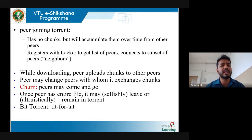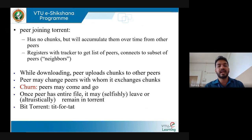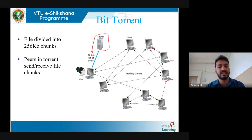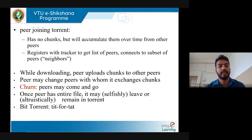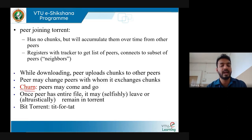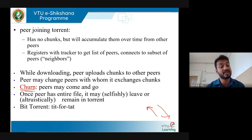A new peer joining BitTorrent starts with no chunks but accumulates them over time from other peers. It registers with a tracker to get a list of peers and connects to a subset of them. While downloading, peers also upload chunks to other peers. Peers may come and go from the network — these are called churn. Once a peer has the entire file, it may leave or remain in the torrent — that depends on the user.